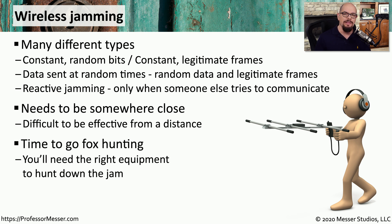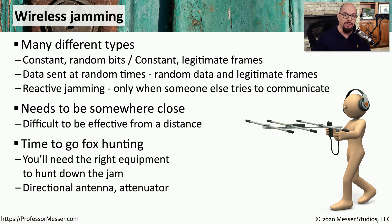Trying to find the source of this particular jamming signal could be challenging. Many times we'll do what's called a fox hunt, where you have a directional antenna and headphones and you can move that antenna around to see where the strongest signal is coming from. As you get closer to the signal, you can attenuate it or make it less strong so that you're able to get a better reading, and eventually you can triangulate where that signal may be coming from.